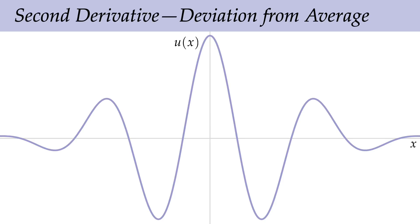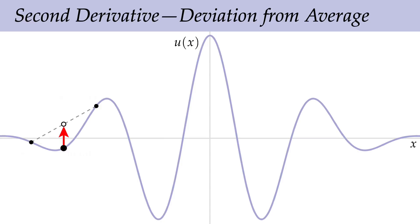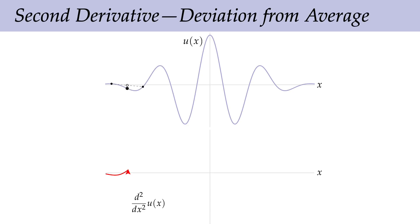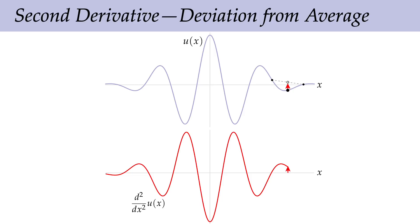We can think about our continuous Laplace operator from the same point of view. Consider a function and a point x₀, with nearby values at x₀ + ε and x₀ - ε. The midpoint of the line segment between these values represents the average, and we can draw an arrow indicating the deviation of u(x₀) from this average. As we move the center point along the graph, this arrow points up or down according to convexity or concavity. As ε goes to zero, this exactly becomes the Laplacian.